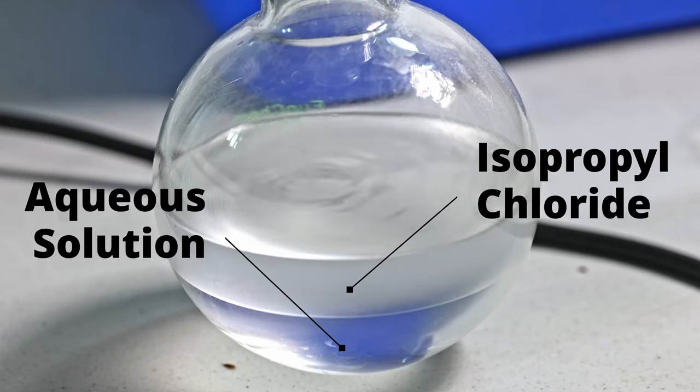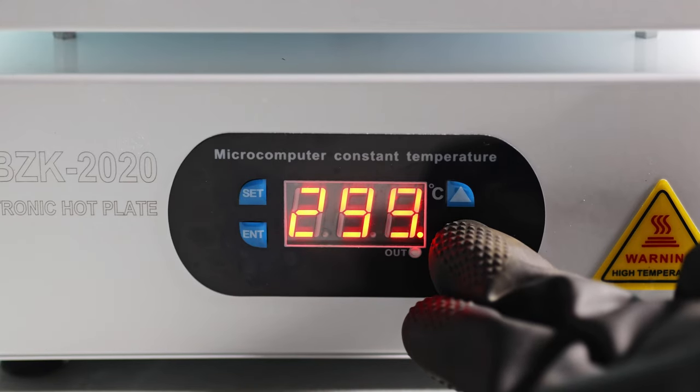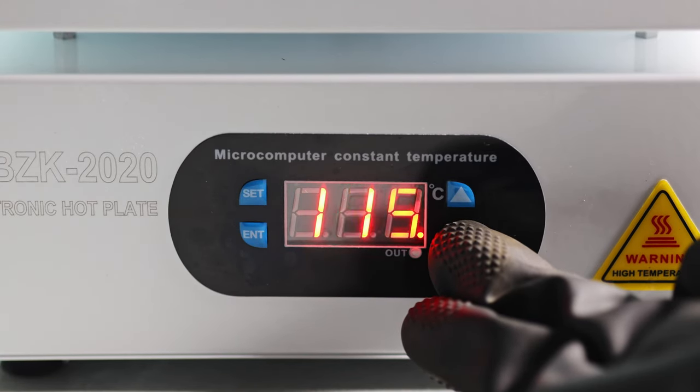As you can clearly see, we're getting more byproducts rather than isopropyl chloride. That means we have gotten the most isopropyl chloride we can get from this reaction. So I'm going to turn off the distillation and begin processing it.